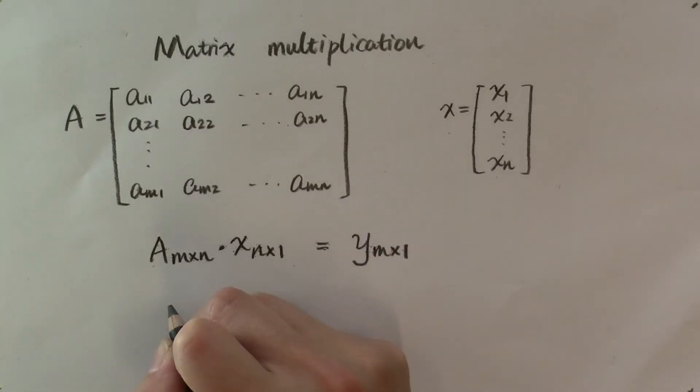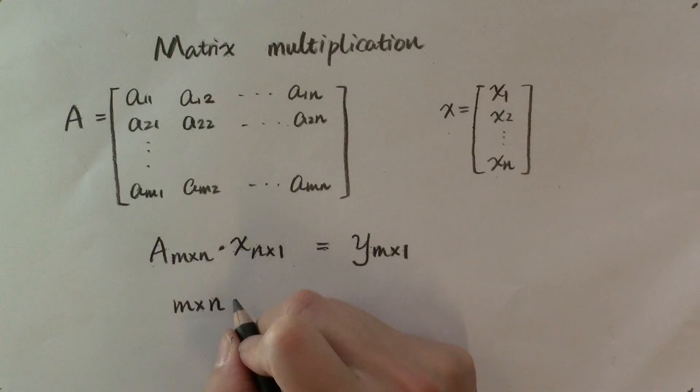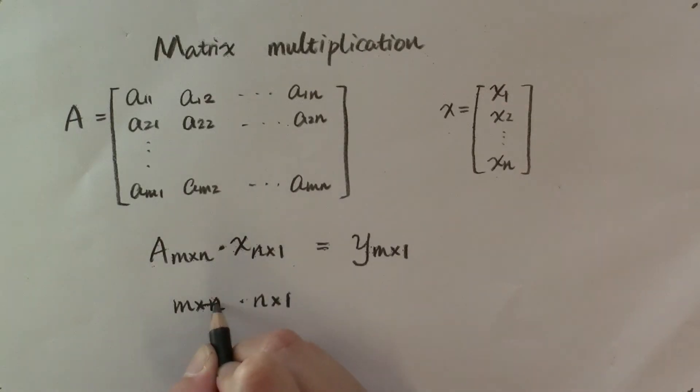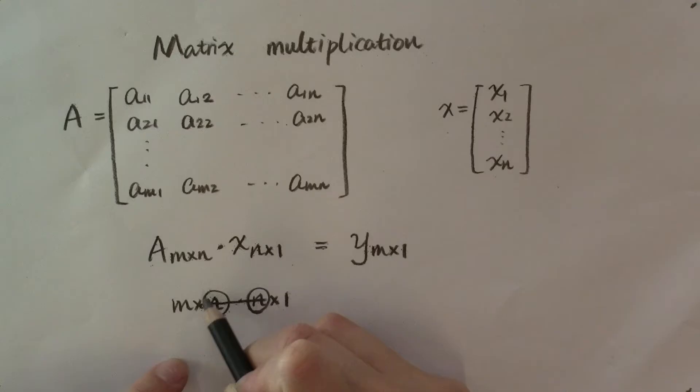You can remember it by thinking that you're multiplying m by n to n by 1, and you're just deleting the middle n's. In fact, if these two numbers in the middle are not equal to each other, then this matrix of this dimension, m by n, will not be able to multiply the vector.